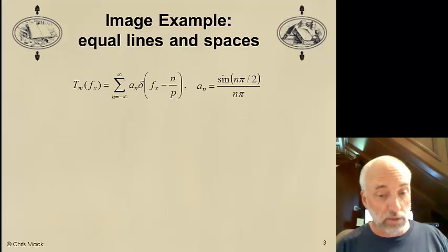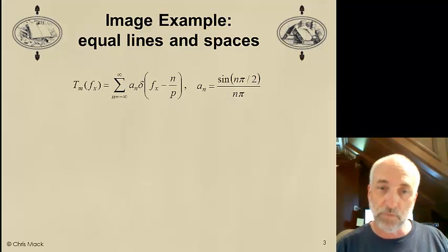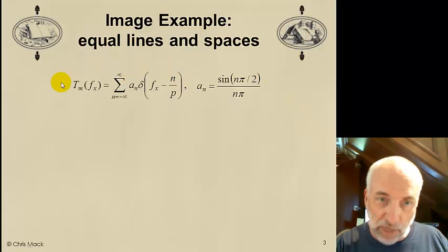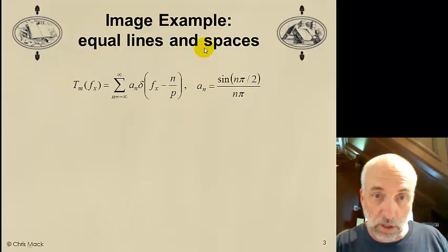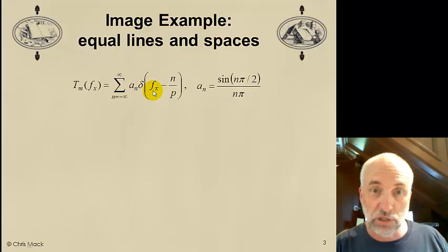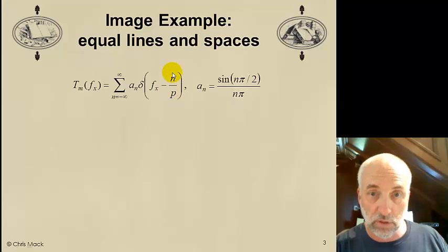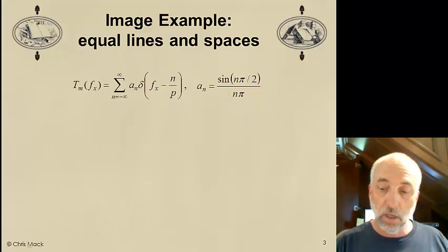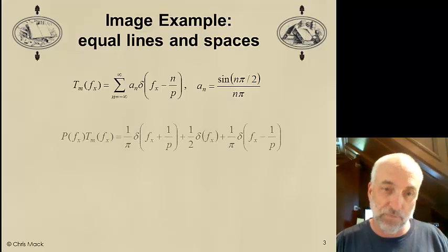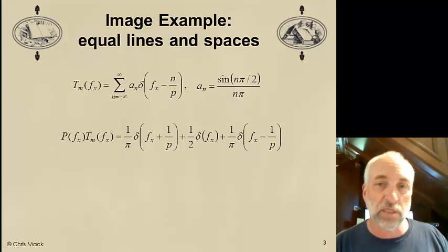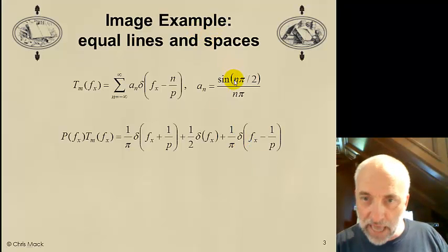Now, what does the lens do? The lens is going to take the inverse Fourier transform. So, let's take our general expression for the diffraction pattern. Delta functions showing the positions in spatial frequency space of the diffracted orders, multiples of N over the pitch. The amplitude of every diffracted order, A sub N, is sine of N pi over 2 divided by N pi, where N is the diffraction order number.